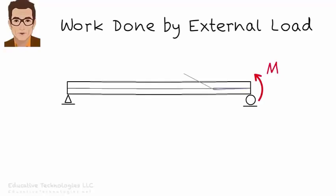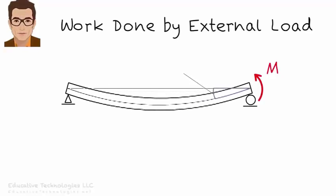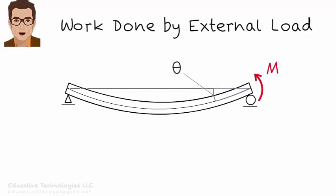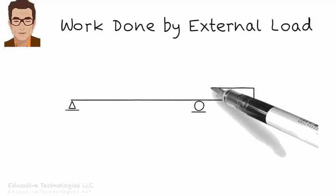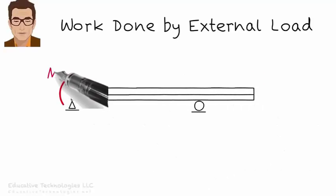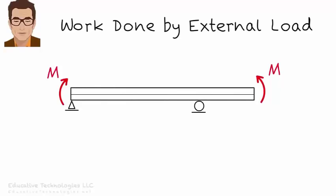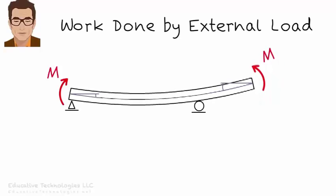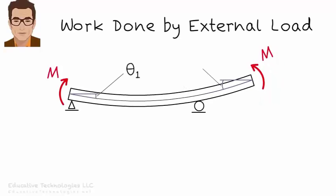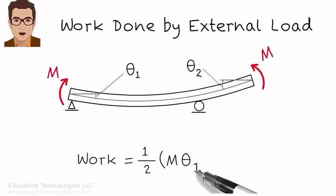For this beam, work can be written in terms of the product of the applied moment by the rotation of the beam under the moment. So external work here equals one half M times theta. And here, total work is one half M times theta 1 plus M times theta 2.